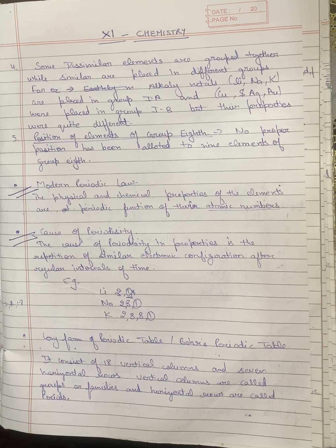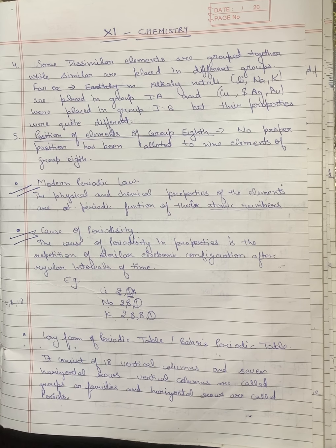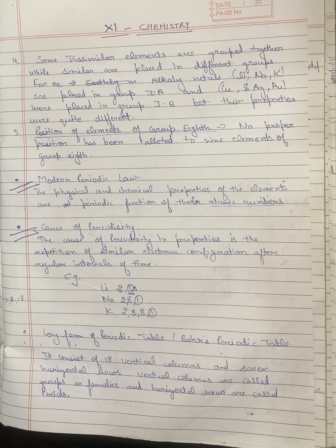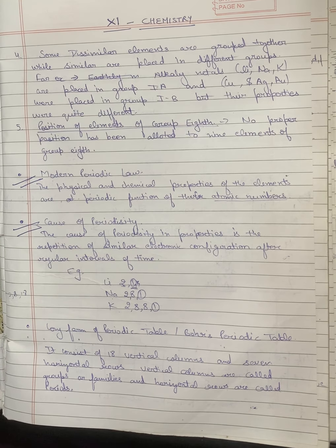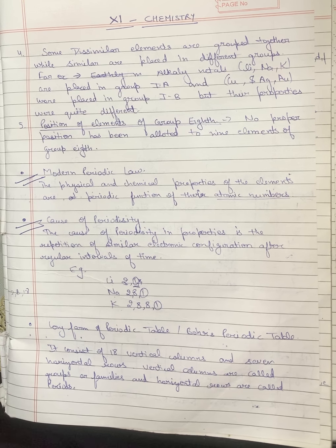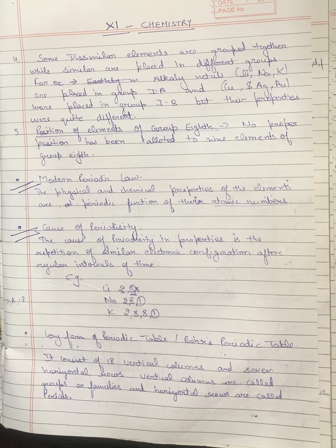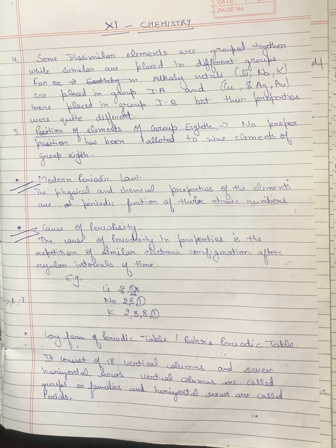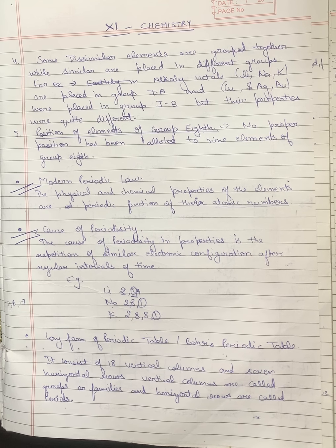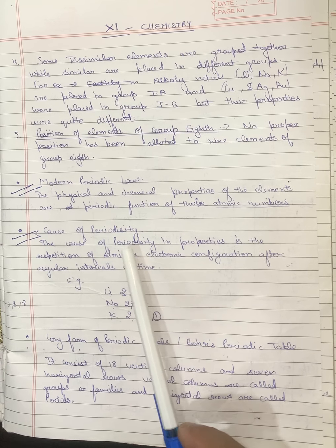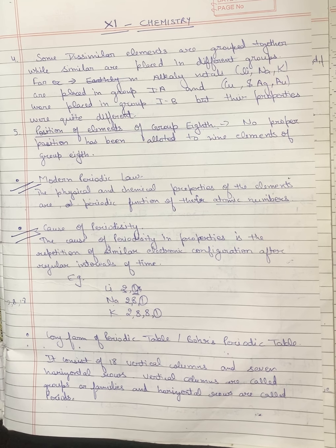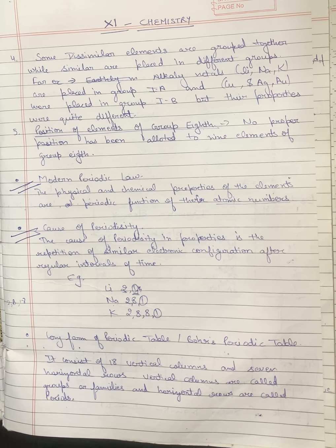Students, we are continuing with the chapter periodic table. Till date we have discussed the historical development and Mendeleev's periodic table. Now we are starting with the modern periodic table. Bohr's long form of periodic table arranges elements according to increasing atomic number, as physical and chemical properties of elements are the periodic function of their atomic number. The question is: what is the cause of periodicity?